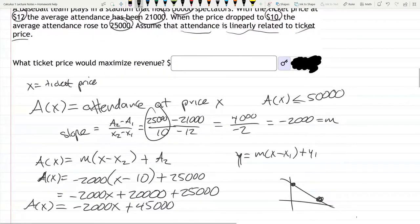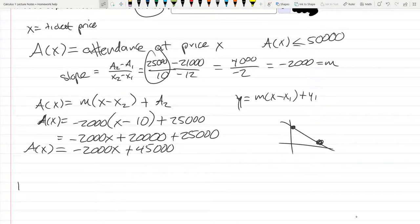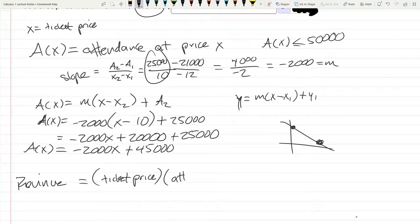We do not have the function to maximize yet. We need the revenue function. Revenue is ticket price times attendance. This is a function of ticket price; we don't get to choose the attendance. Ticket price is X, and the attendance is A(X), which is negative 2,000X plus 45,000.